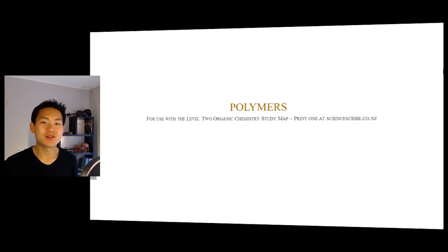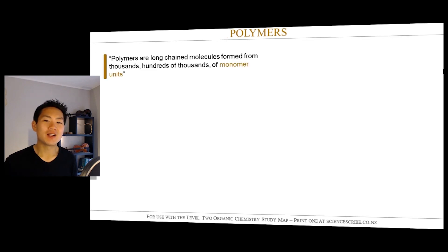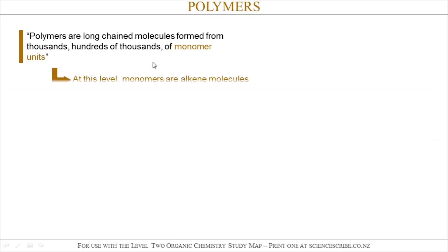NCEA Level 2 Organic Chemistry. Let's talk about polymers. Polymers are just long-chained organic molecules which are formed from thousands and hundreds of thousands of small tiny units called monomer units. In Level 2 Organic Chemistry, our monomer units are just going to be simple alkene molecules.